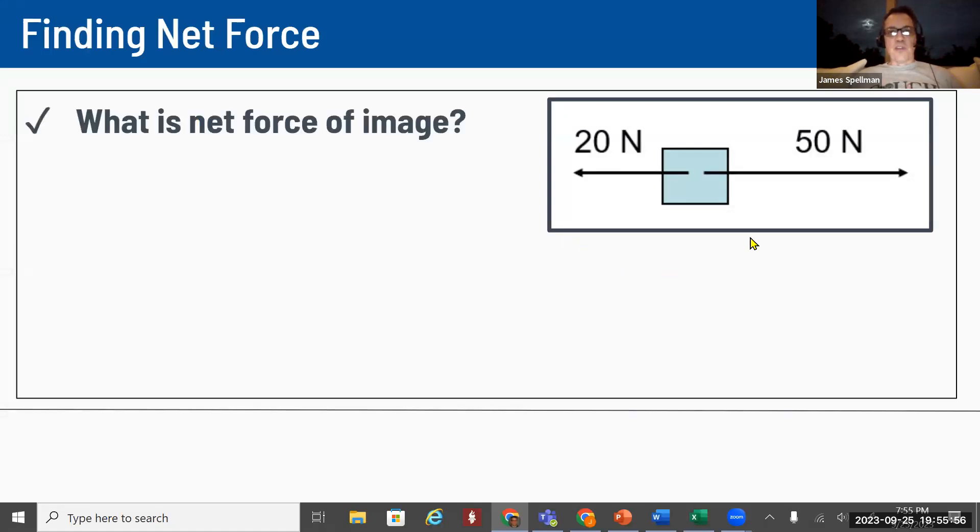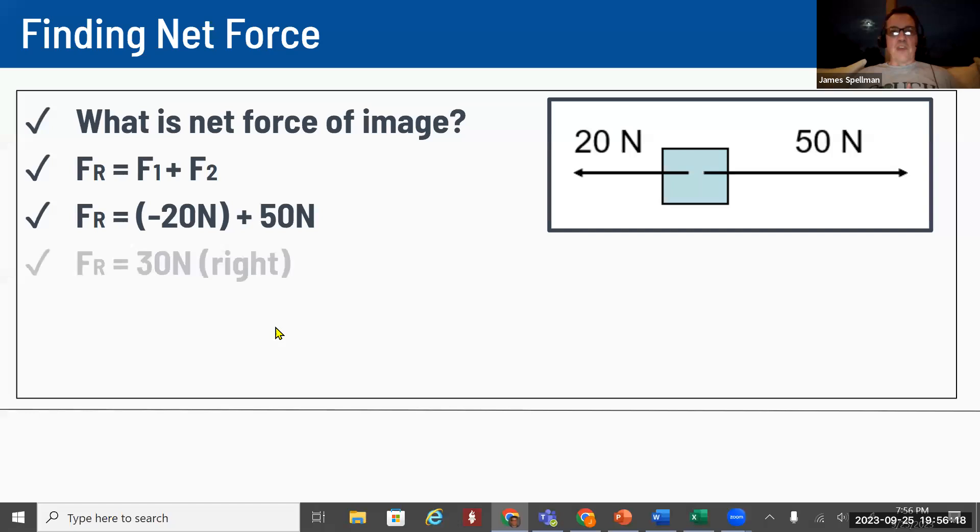So a few examples, if we wanted to find the net force of things. Looking at this image, what's the net force of this image? If I have this image, then the net force is going to be both of these forces added together. It's not 50 plus 20 because they're in opposite directions. So we would take the left direction and call it a negative and then add them together. And we would get a resultant force of 30 newtons to the right on this one.